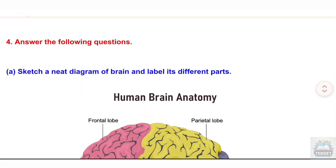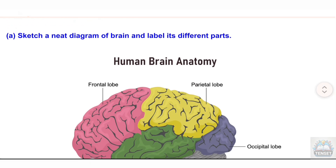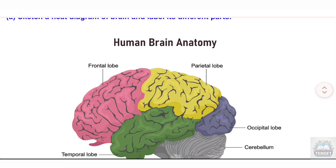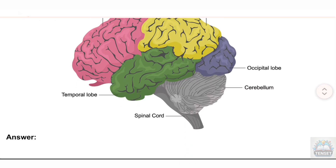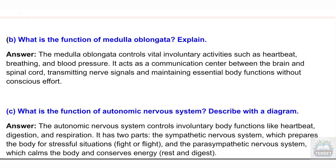Question 4. (a) Sketch a neat diagram of the brain and label its different parts. (b) What is the function of the medulla oblongata? Answer: The medulla oblongata controls vital involuntary activities such as heartbeat, breathing, and blood pressure. It acts as a communication center between the brain and spinal cord, transmitting nerve signals and maintaining essential body functions without conscious effort.